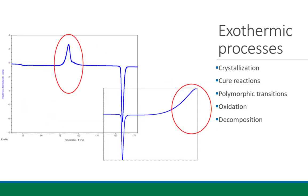A couple of examples of exothermic processes are shown on screen: crystallization on the left gives a peak in the positive direction, and decomposition on the right trails off into a never-ending slope. Other exothermic processes include cure reactions, polymorphic transitions, and oxidations — all of which give a positive change in the graph.